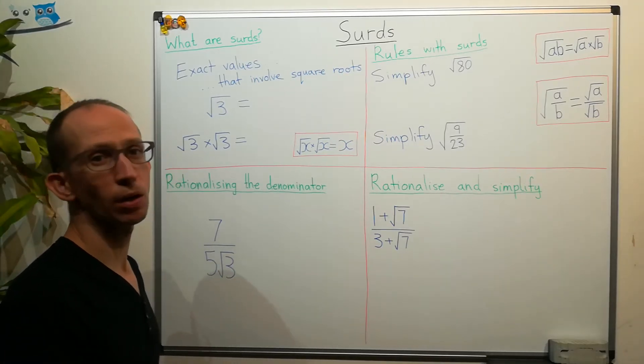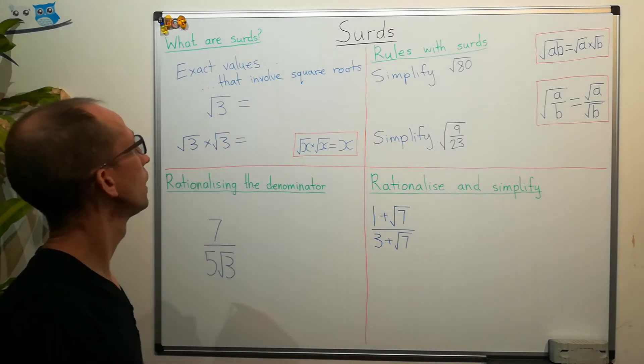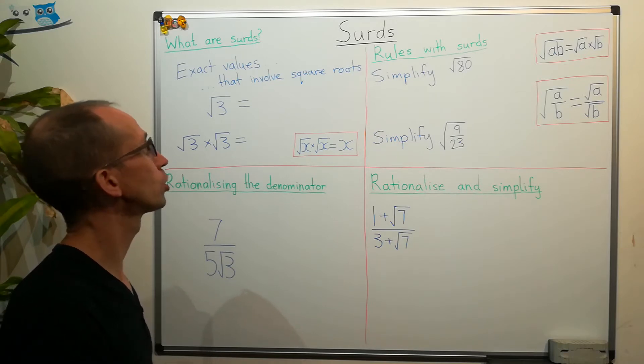Hi, in this video we're going to be looking at surds. Now we've got a definition up here for what surds are. They're exact values that involve square roots.